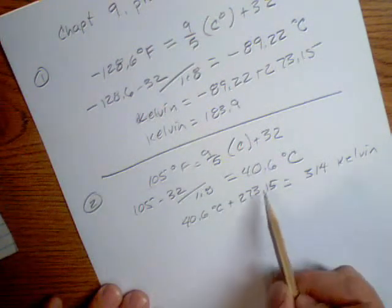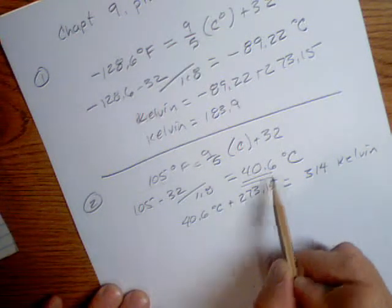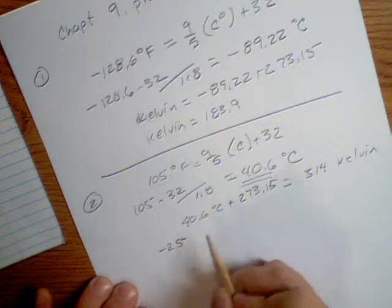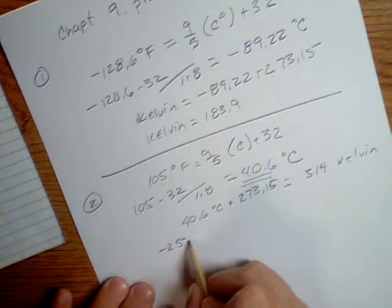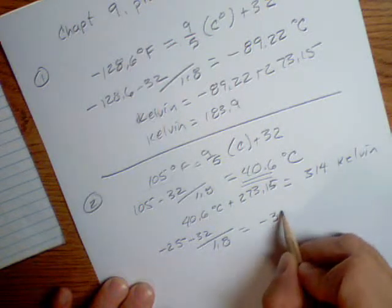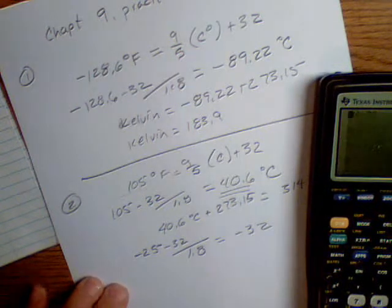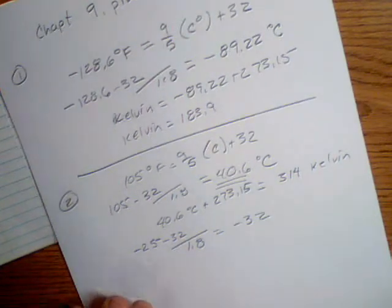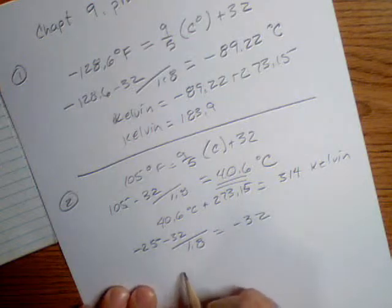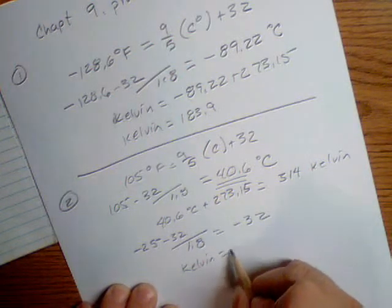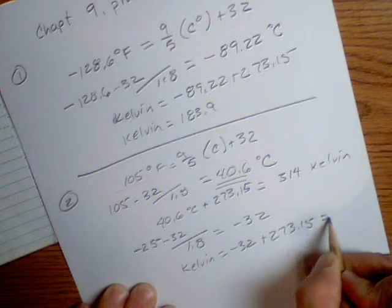The lower limit is negative 25°F. Negative 25 minus 32 divided by 1.8 equals negative 32 degrees Celsius. And for Kelvin, all I have to do is add 273 — and that would be 241 Kelvin.